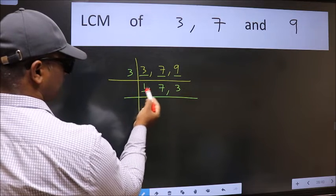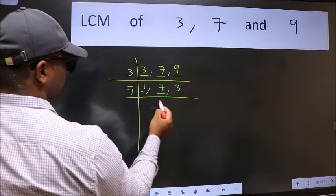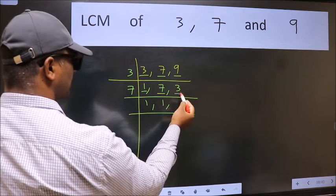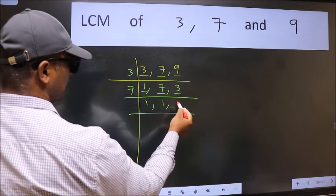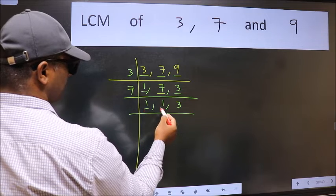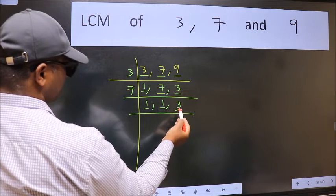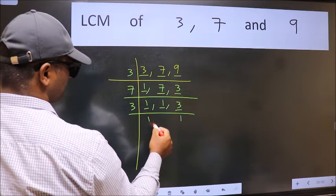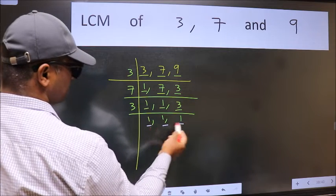So focus on to the next number 7. 7 is a prime number, so 7 wants 7. The other number 3 is not divisible by 7, so we write it down as it is. Now we got 1 here and here. So focus on to the next number 3. 3 is a prime number, so 3 wants 3. So we got 1 in all the 3 places.